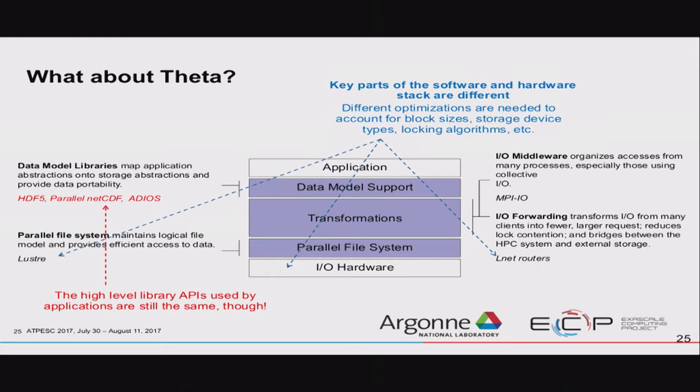To give an example of why this changes from system to system — comparing to Theta, another machine at Argonne: the parallel file system is totally different (Lustre), the I/O forwarding is totally different (Lnet routers instead of I/O forwarding nodes), the I/O hardware is from a different vendor with different types of hard drives. All these things are different, meaning all optimizations have to be a little different. But if you stick to the top-level libraries, those haven't changed — they're tuned per system to try to do the right thing and will adapt to the system you're on.